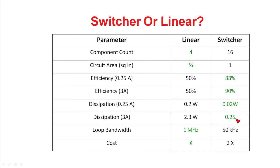This translates into much simpler thermal designs. A detractor for the switcher, though, is loop bandwidth — the linear regulator is capable of much higher response speeds than the switcher, allowing it to respond to transient load conditions much quicker. The final comparison point is cost: in general, the switcher is going to be at least twice as expensive as the linear regulator, and may approach three or four times as much.